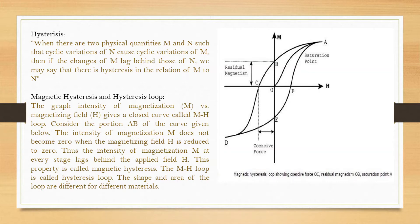It will not follow the path AO while returning from the maximum value of H towards 0 — it follows a different path, shown as AB in this picture. When the value of H is reduced to 0, the material still has some finite magnetization — a remnant magnetization. Now applying the opposite field, at a certain value of minus H the magnetization becomes 0 — it gets demagnetized — following path B, C, D.